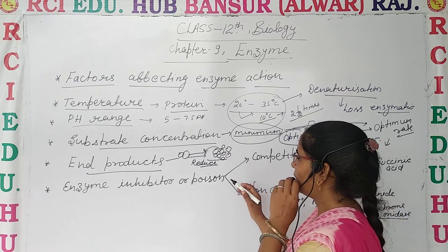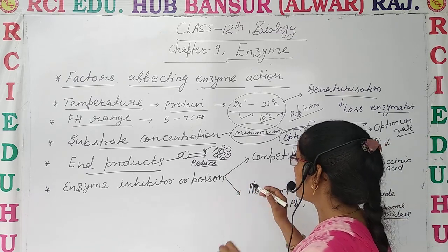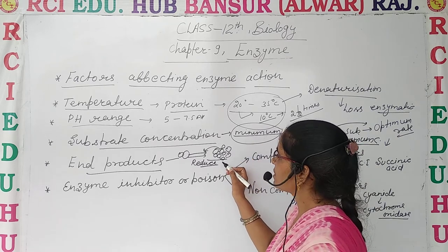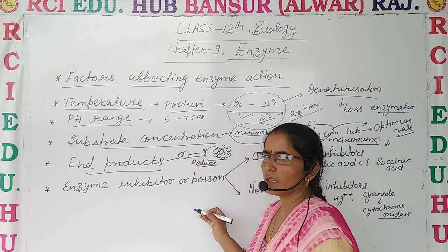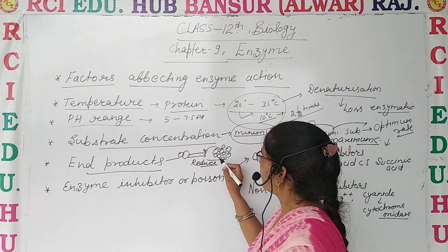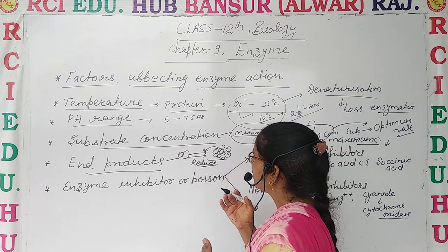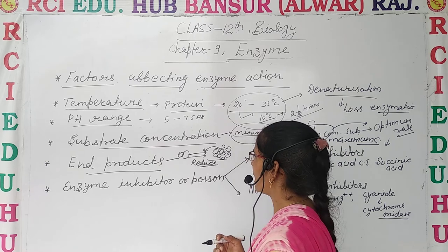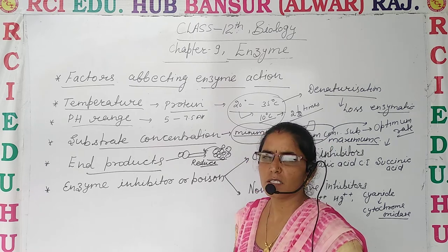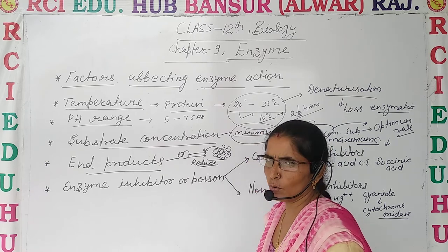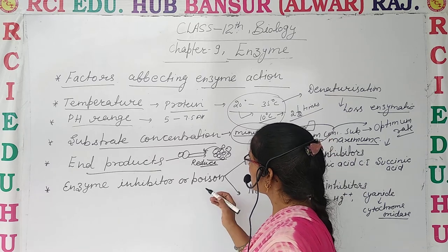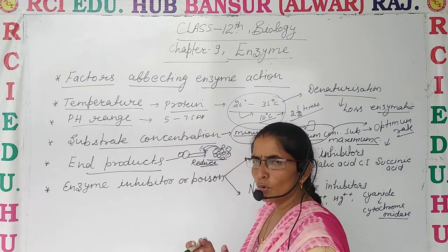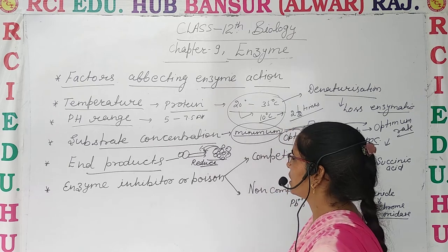When end products increase in concentration, they decrease the enzymatic activity. One stage comes when this decrease reaches equilibrium and enzyme activity becomes zero. At this stage, the reaction moves in the reverse direction.